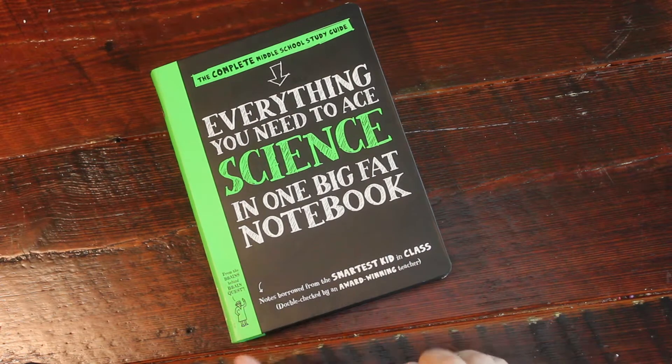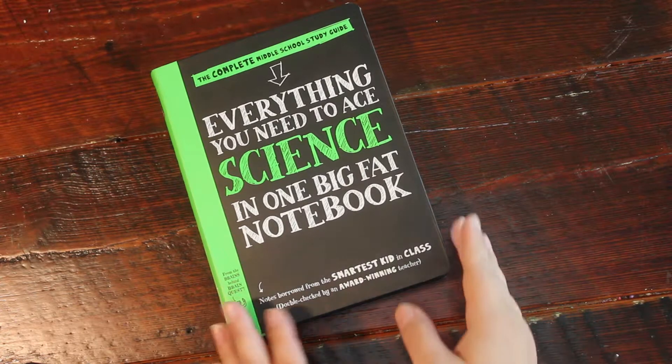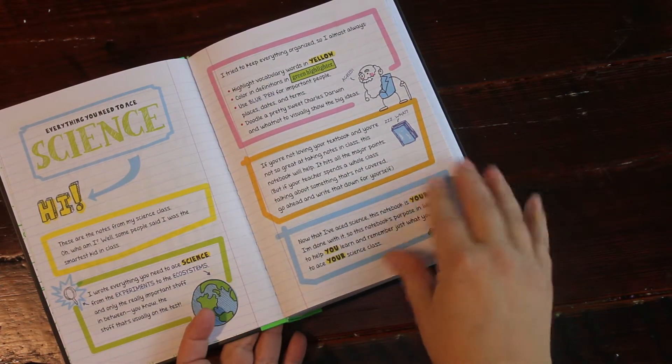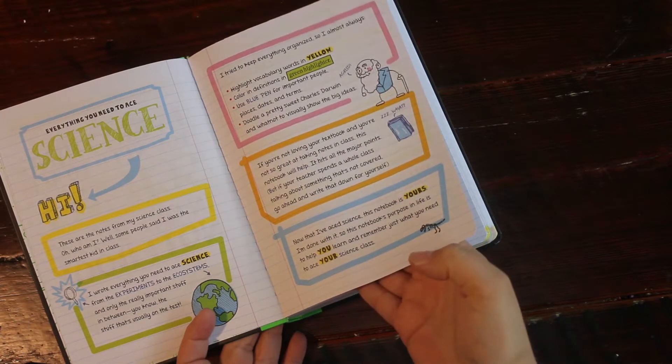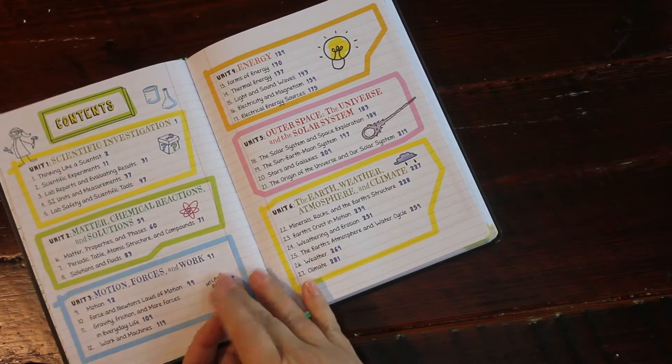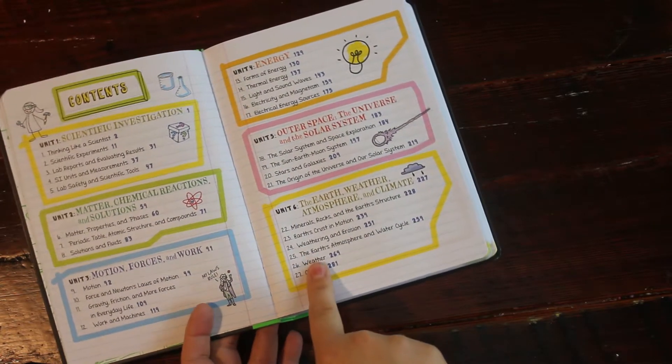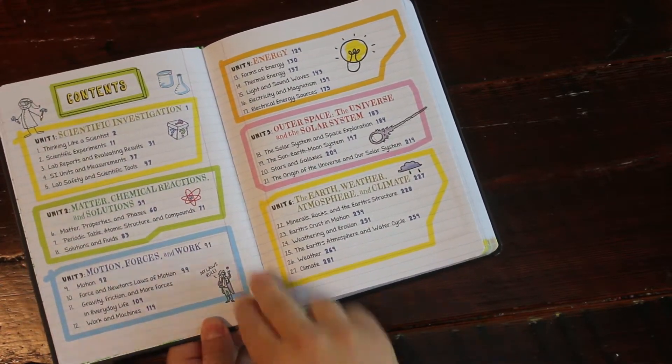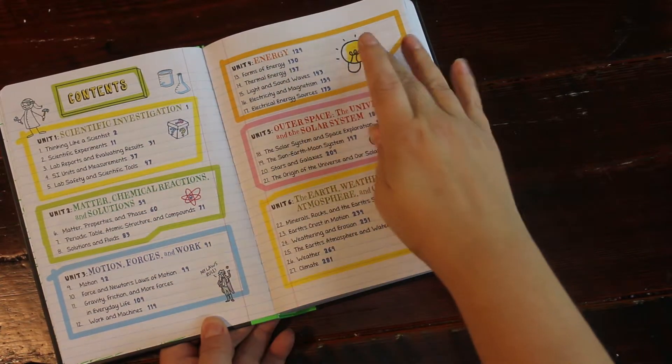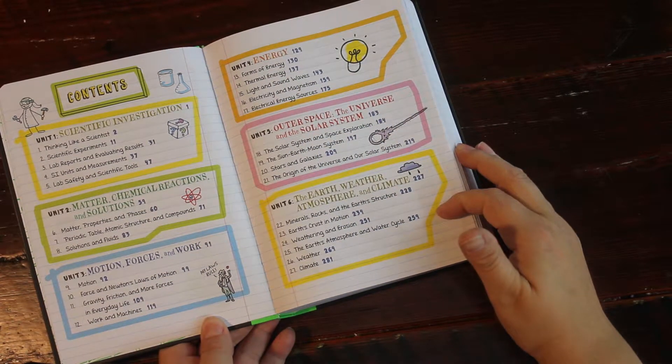And these are all kind of laid out the same way. And here is the inside, gives you kind of an overview of how it is written out. And then here is the table of contents.